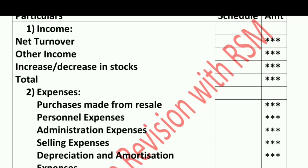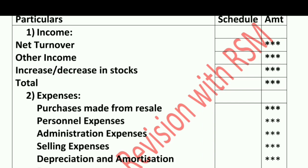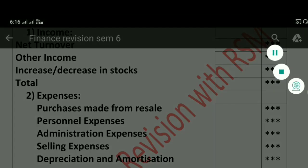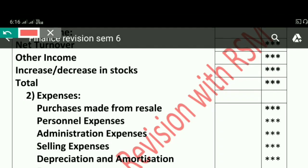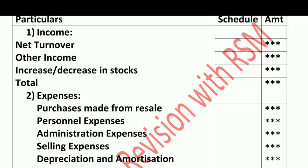So if you check these three points properly — that is Net Turnover, Other Income, and Increase or Decrease in Stock — we will find Total Income. Net Turnover plus Other Income plus Increase or Decrease in Stock gives us Total Income.